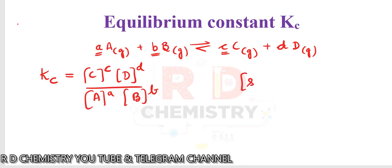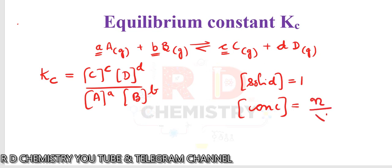If a solid is involved, the concentration of the solid should be taken as equal to one, according to IUPAC. The concentration term is generally expressed as molarity — molarity equals number of moles of the given substance divided by volume in liters. If the volume is not mentioned in the question, consider the volume equal to one liter; otherwise it will be mentioned.